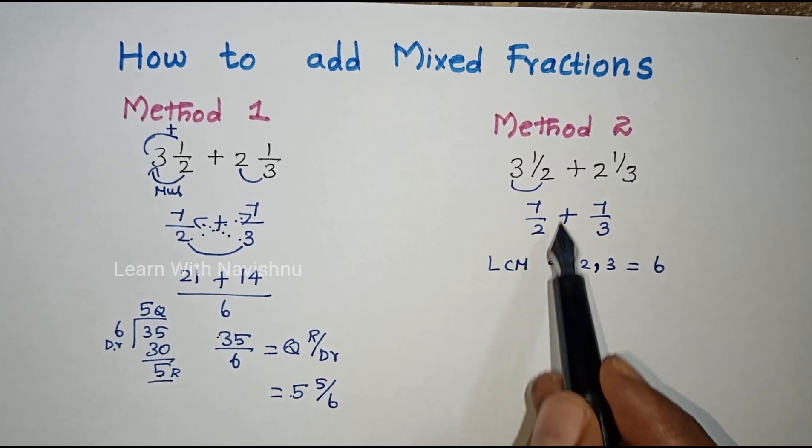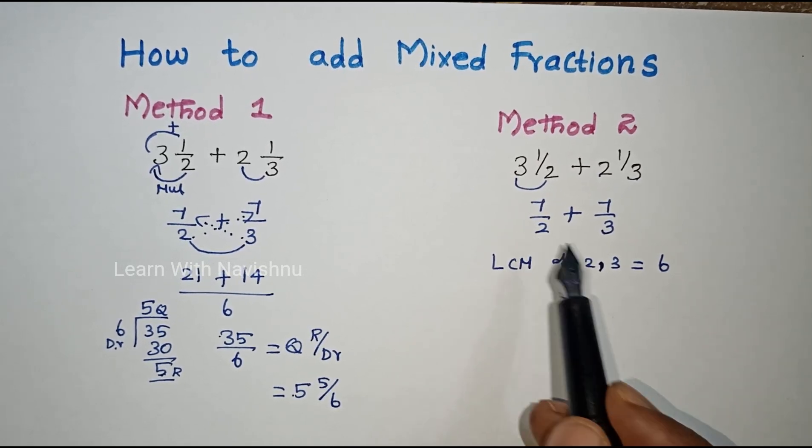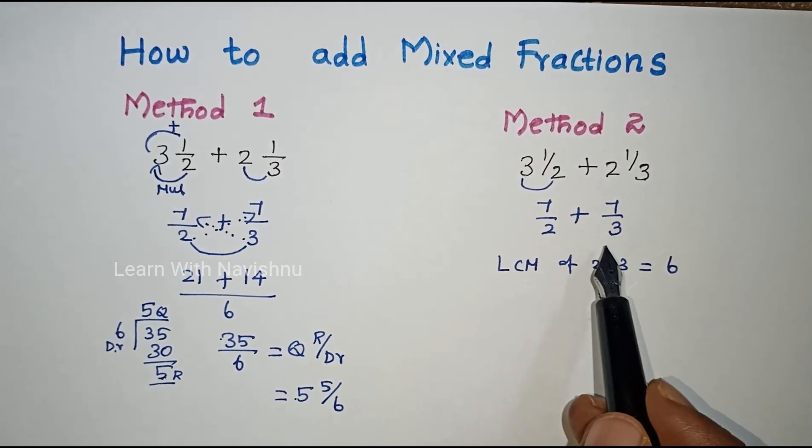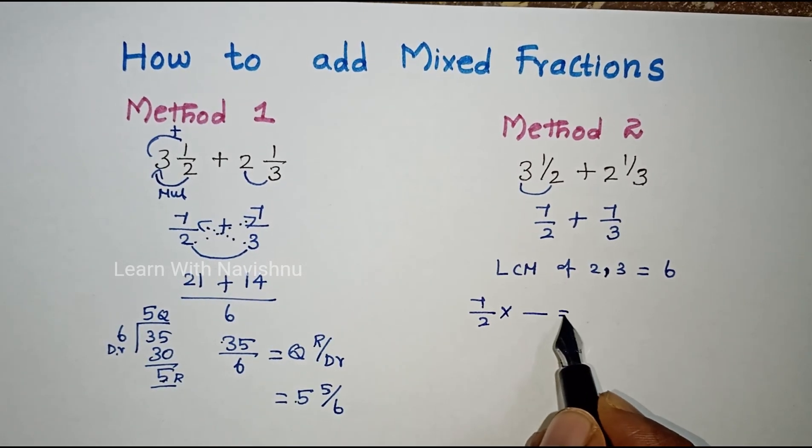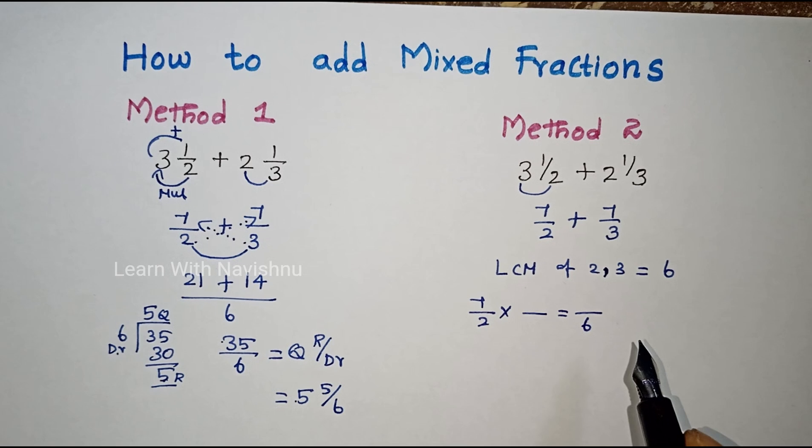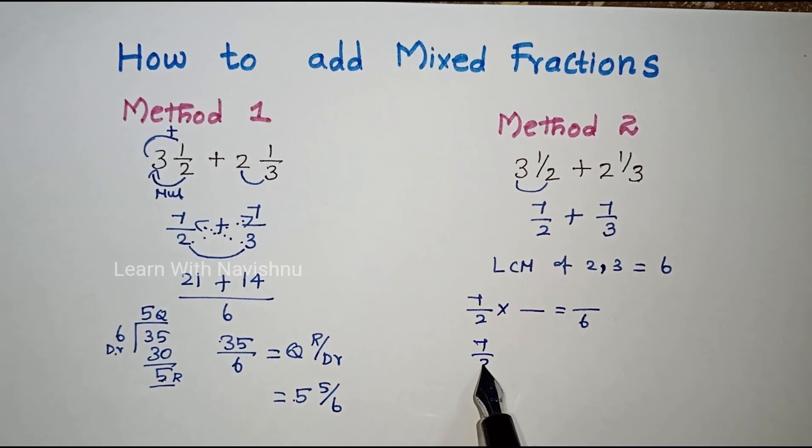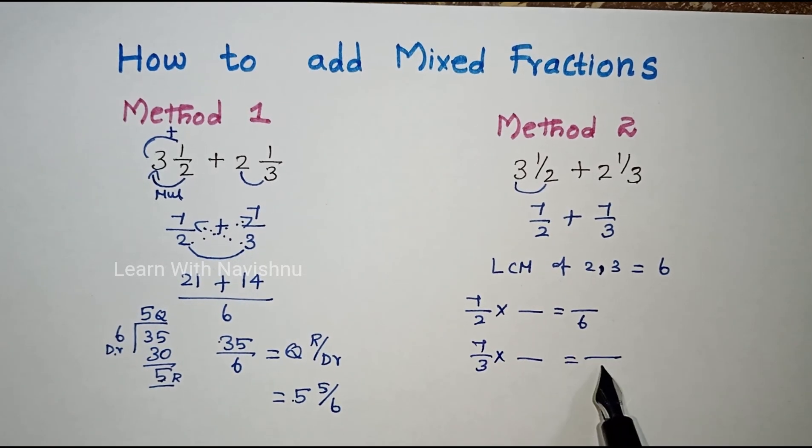We will find the LCM value. The first term denominator is 2, the second term denominator is 3. We need the denominator to be 6. For 7/2, the denominator is not 6. For 7/3, the denominator is not 6.